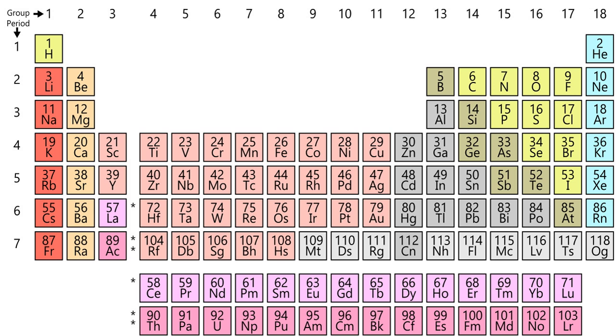For example, the alkali metals lie in the first column and share similar properties, such as high reactivity and the tendency to lose one electron to arrive at a noble gas electronic configuration.